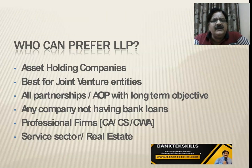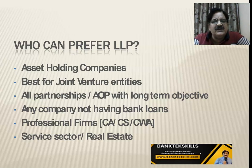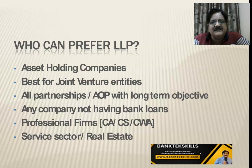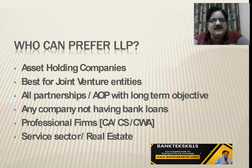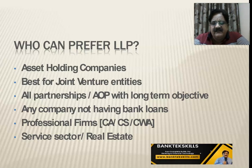Who can prefer LLP? Asset holding companies forming subsidiaries, joint venture entities — LLP is the best form for starting a joint venture — all partnerships, associations of persons (AOP) with long-term objectives, companies not having bank loans, professional firms like CAs and CWAs, and entities in the service sector and real estate.